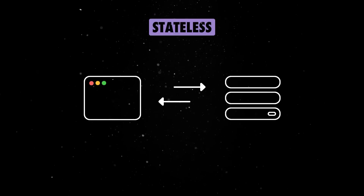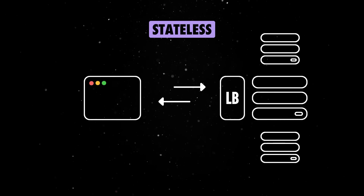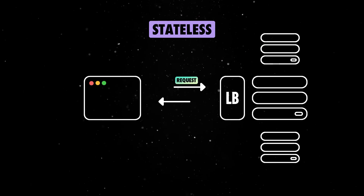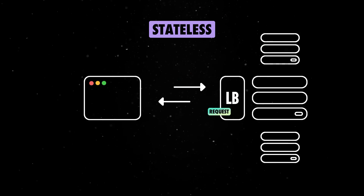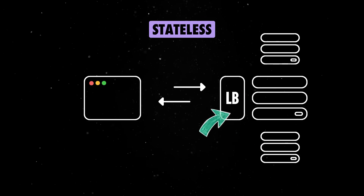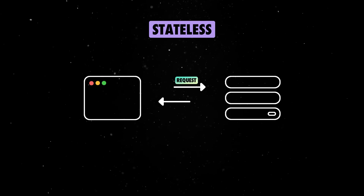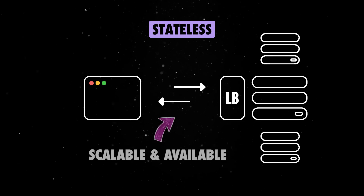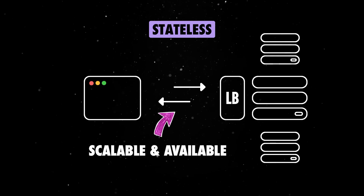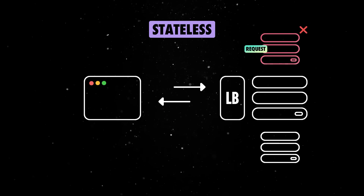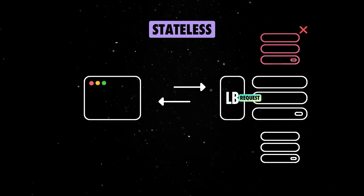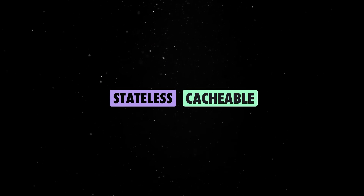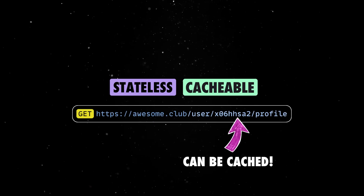REST APIs should be stateless. In a distributed environment, stateless means client requests aren't tied to a specific server — servers don't keep session states, allowing clients to interact with any server in a load-balanced manner. In a single-server setup, the server handles requests without any knowledge of previous requests. This makes your API scalable: any server can handle any request, so if one crashes, another picks up the slack. Stateless APIs are also easier to cache and optimize, since the same response can be returned for identical requests.